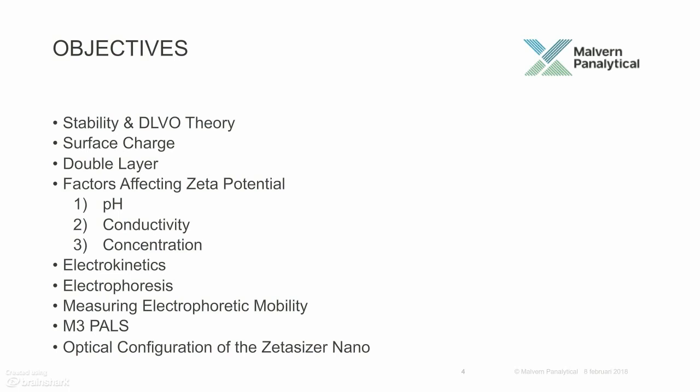We have a lot of topics to cover today. Moving on to my next slide, you can see that I have quite a list of objectives. We're going to talk about stability and DLVO theory, surface charge, double layer, factors affecting zeta potential — pH, conductivity, concentration. We'll talk about electrokinetics, specifically electrophoresis, measuring electrophoretic mobility. We're going to talk about the zetasizer using M3 PALS, which is a patented method by Malvern Instruments, and the optical configuration of the zetasizer nano. And that will finish out this talk.